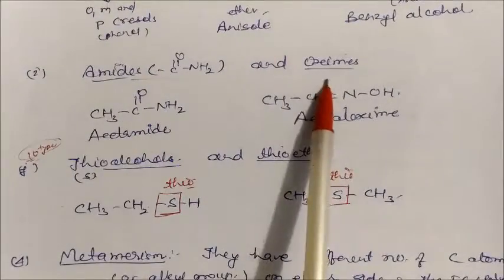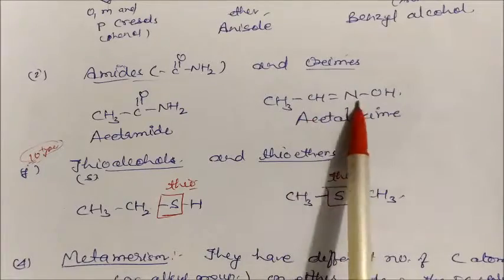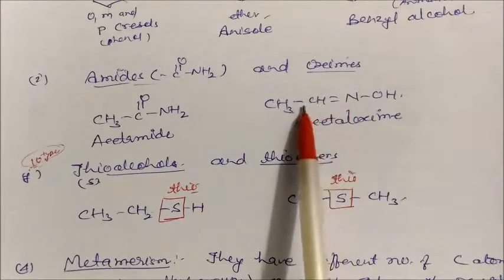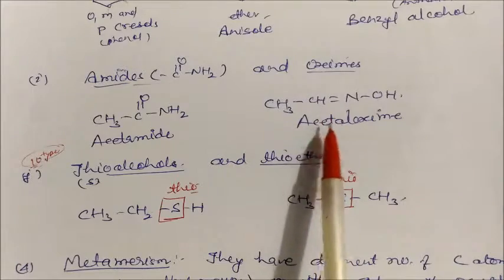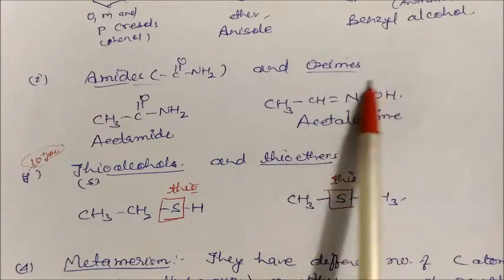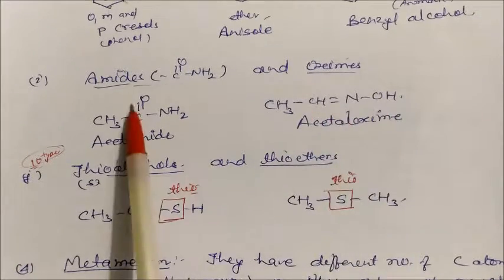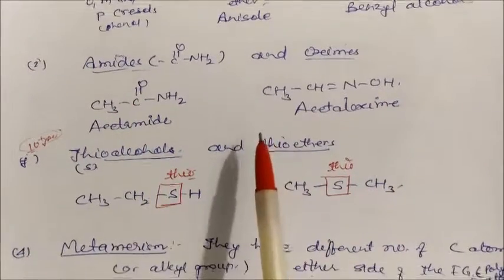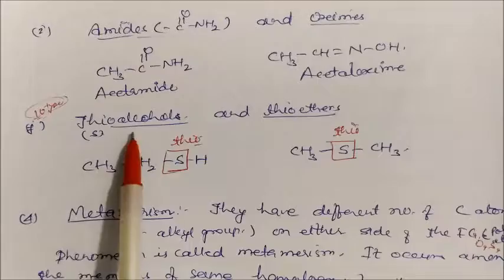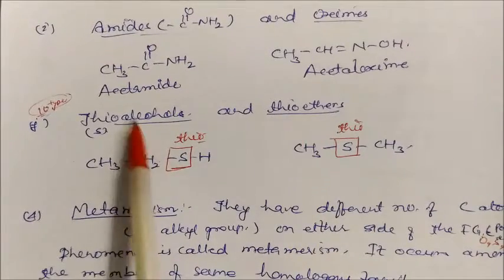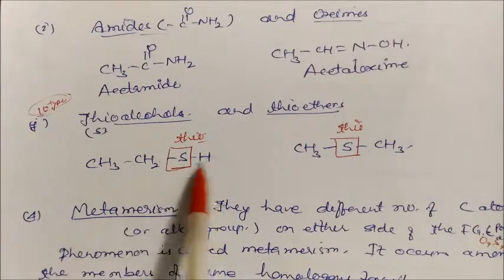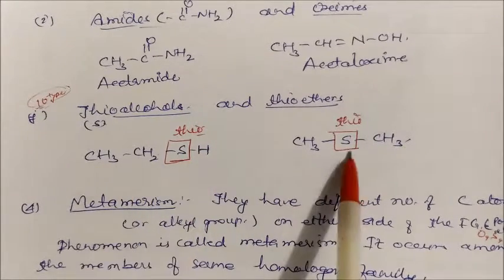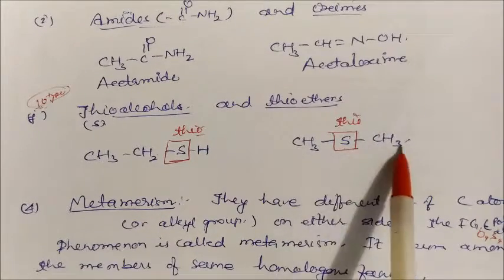Next are amides and oximes. An oxime has the NOH group where nitrogen is double-bonded to carbon — for example acetaldoxime. An amide has the CONH2 group. So amide and acetaldoxime are functional isomers. Finally, thioalcohols (containing SH group) and thioethers (R-S-R) are also functional isomers.